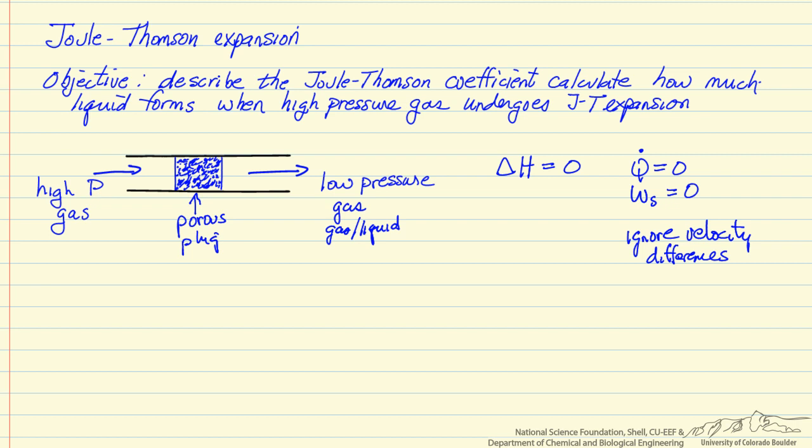Because it's a non-ideal gas, there will be this temperature change. And the Joule-Thompson coefficient is just the derivative of temperature with respect to pressure. This is a partial derivative at constant enthalpy. And this turns out can be written as the temperature times the partial derivative of volume with respect to temperature at constant pressure minus the specific volume, the molar volume, divided by the heat capacity.